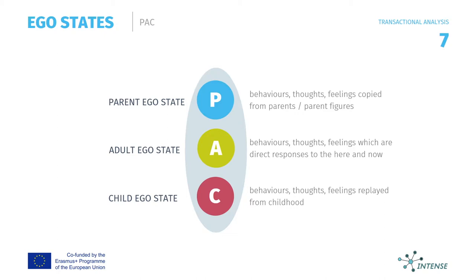The parent ego state is produced by the playback of recordings in the brain of unquestioned or imposed external events perceived by the person before his or her social development. This ego state consists of knows, don'ts, or how-to-do's — in other words, the thought concepts of life. The child ego state is the response the little person produced to what he or she saw, heard, felt and understood. This ego state may be considered the collection of felt concepts of life.